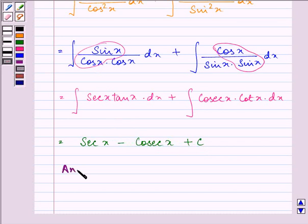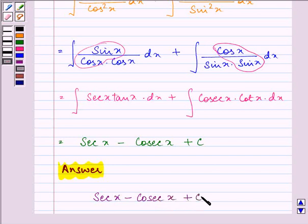So the required answer is secant x minus cosecant x plus c.